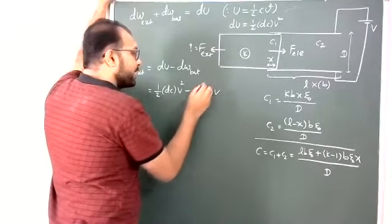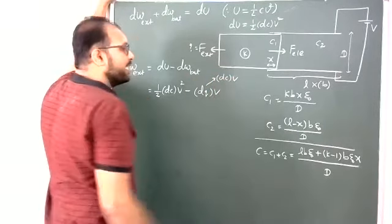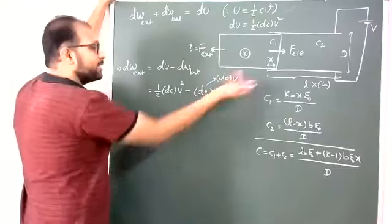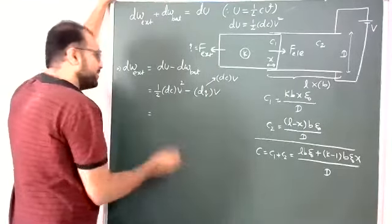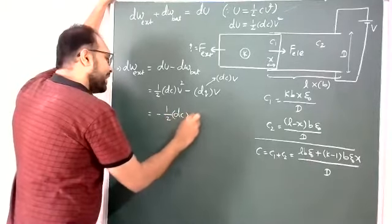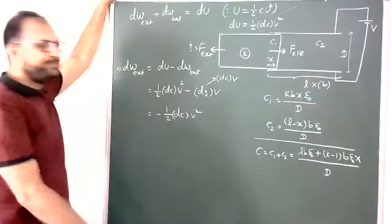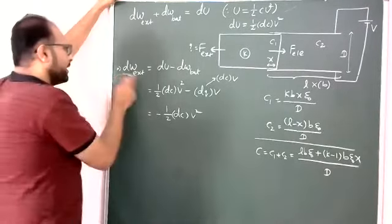So dU is half dC V², and work by the battery is dQ times V. But dQ equals dC times V. That is why we get dC V² minus half dC V², which equals minus half dC V².